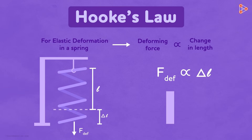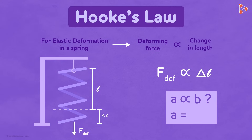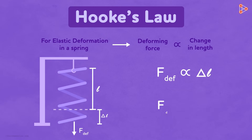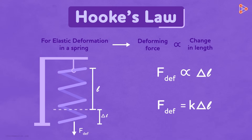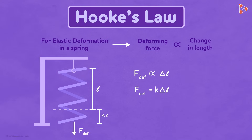The law states that force F is directly proportional to Delta L. When one quantity is directly proportional to another, it means one thing is some constant times the other. So we can write F = K × Delta L, where K is the proportionality constant. This is the mathematical form of Hooke's Law. In some textbooks, you may notice a negative sign on the right side of this equation.